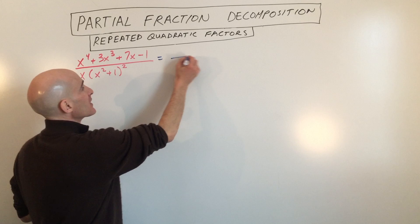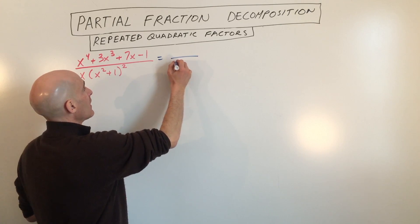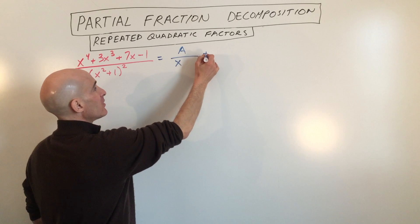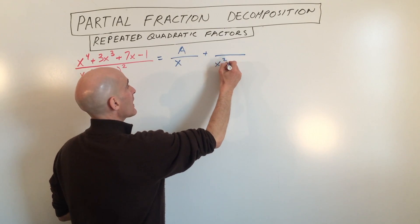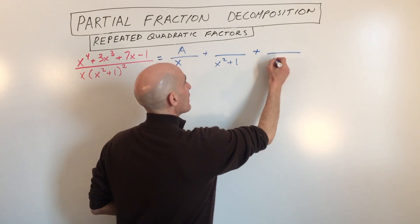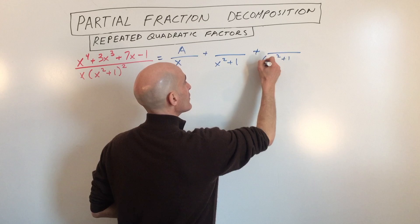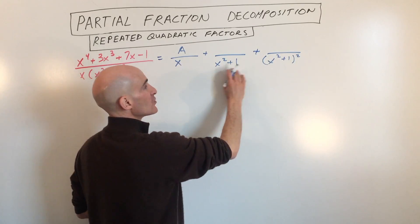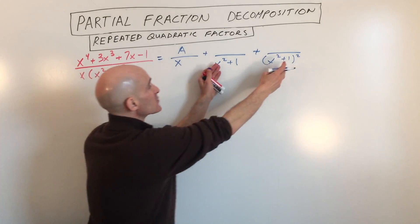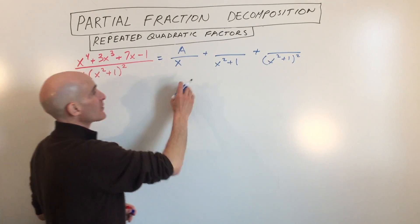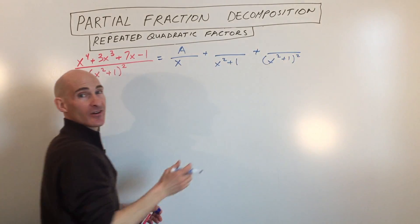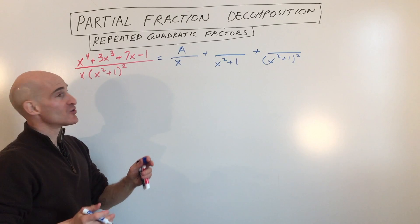What we're going to do is break it up. We know it's going to be over x — with A as the numerator since it's one degree less — plus over (x² + 1), and plus over (x² + 1) squared. We have to take into account both of these: the one to the first power and the one to the second power, because when we combine them we get a common denominator. We won't know if we need both or just one, so we have to account for both.